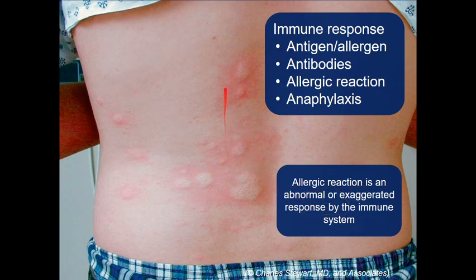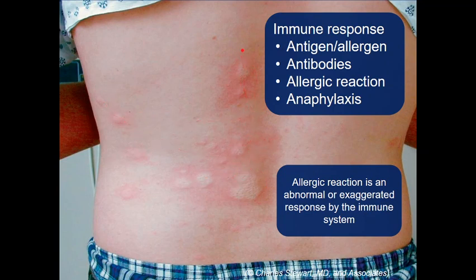An allergic reaction is an abnormal, exaggerated response by the immune system. This person has urticaria, also called hives — a raised plaque surrounded by erythema, which is probably itchy, with multiple spots. This is just a skin manifestation of an allergic reaction.